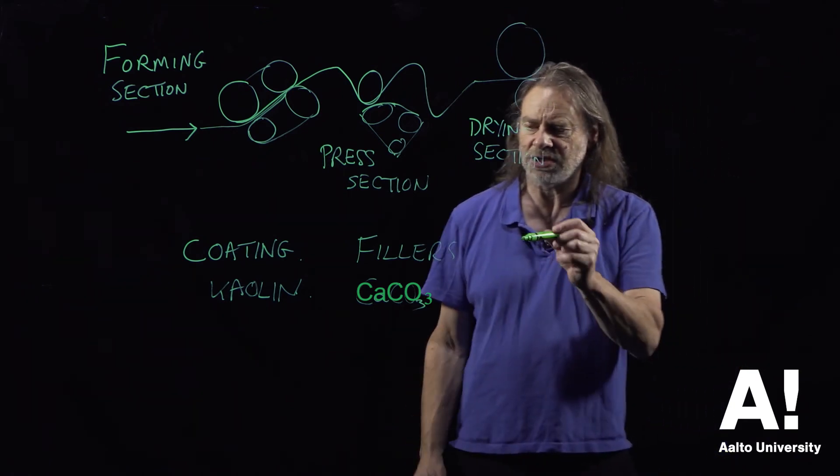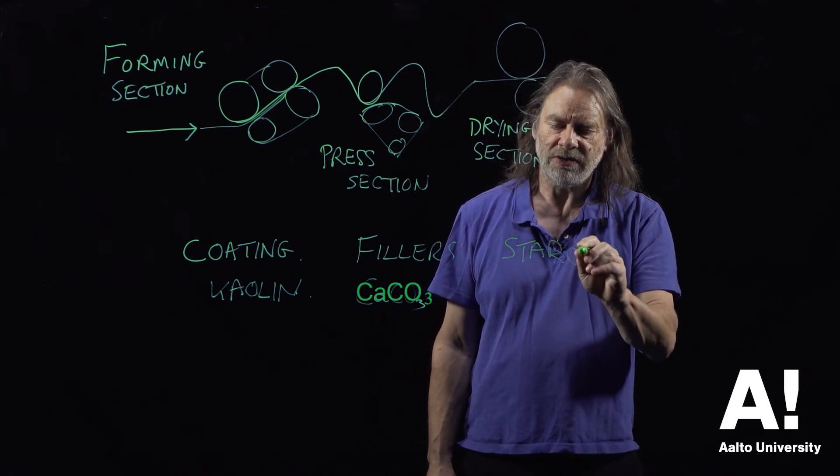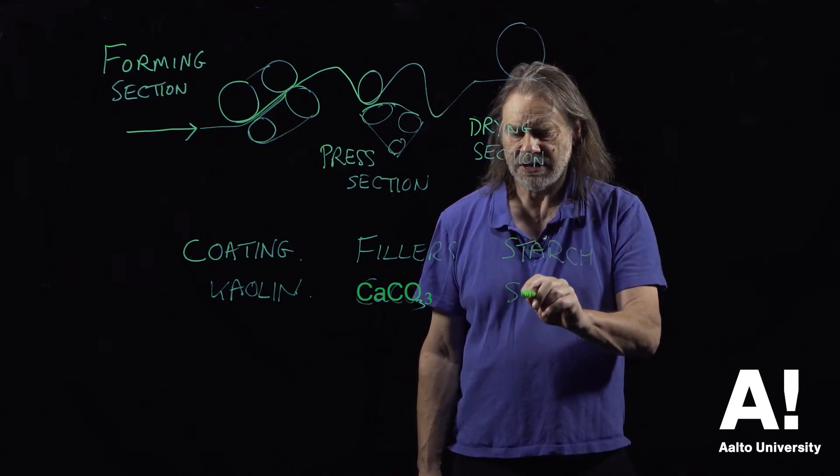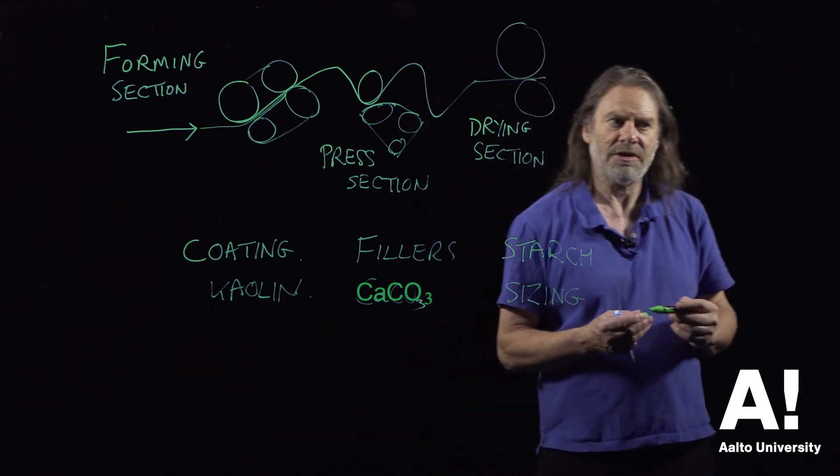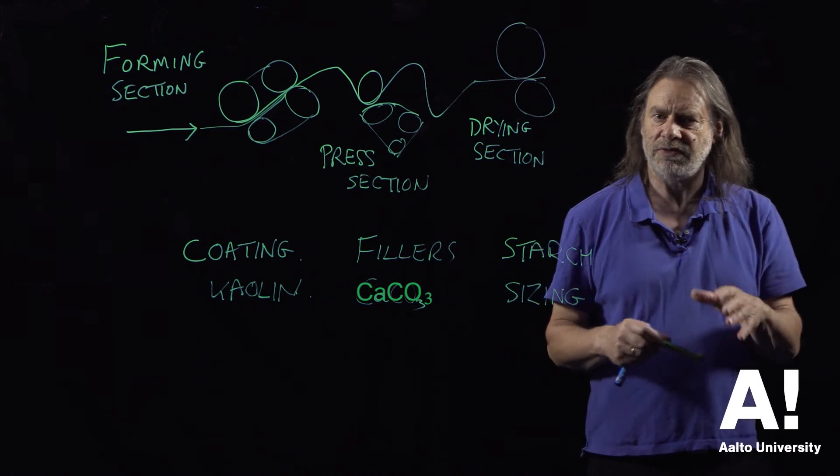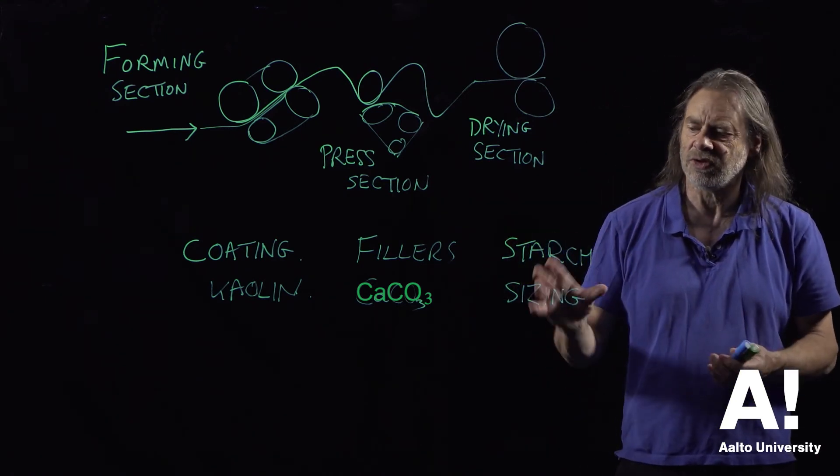You can put other additives in—starch is used quite a lot because it acts not only as a sizing agent, which helps to improve the surface of the paper, but it also helps to stick the fibers together so you can have stronger paper.